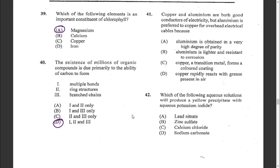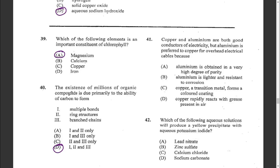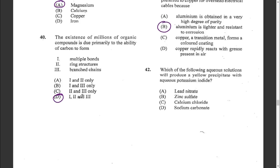Question forty-one: copper and aluminum are both good conductors of electricity, but aluminum is preferred for overhead electrical cables because aluminum is lighter and resistant to corrosion. The answer is B.